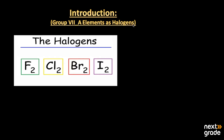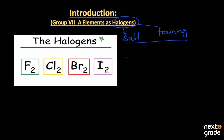Asalaamu alaikum, my dear students. I hope all of you are fine and doing well. The topic we will discuss here is about the Group 7A elements, which are also called the halogens. The word 'halo' means salt and 'genes' means forming, so all elements of Group 7A are salt-forming — that is why they are called halogens.